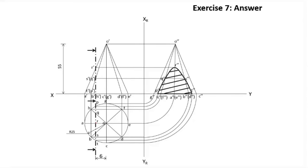O dash, A dash intersecting — the point is R dash. S dash and Q dash: S intersects with generator O,B and Q intersects with generator O,H. So O dash, B dash intersecting gives one point and O dash, H dash intersecting gives the other. These generators are the reference for locating those section points.